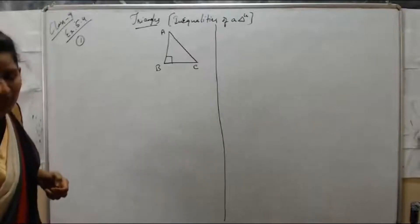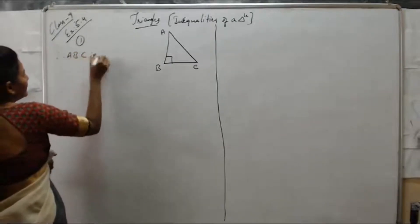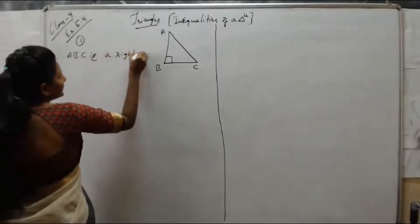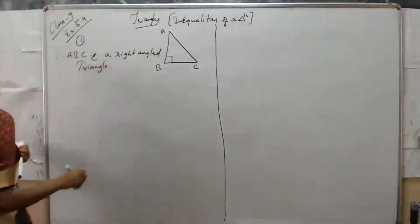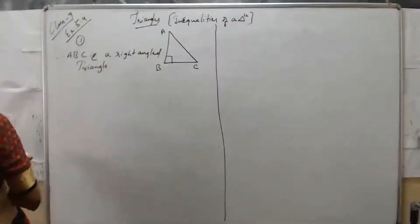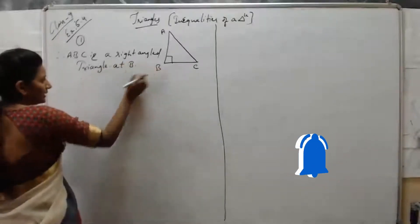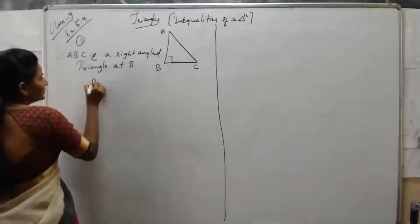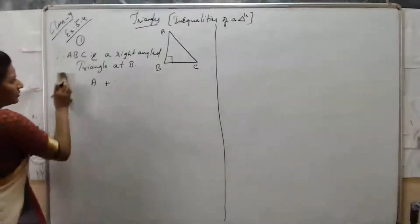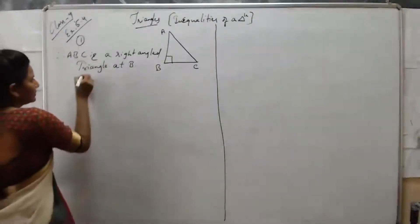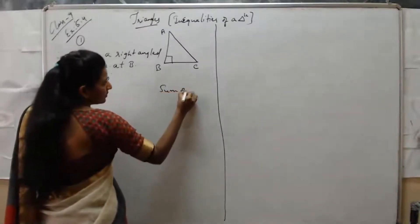Given that ABC is the right angle triangle, angle at B is equal to 90 degrees. Therefore, if B is equal to 90 degrees, we know that the sum of angles of a triangle is 180 degrees.